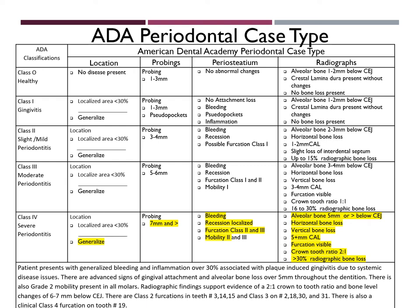My ADA periodontal case type statement reads as follows: Patient presents with generalized bleeding and inflammation over 30% associated with plaque-induced gingivitis due to systemic disease issues. There are advanced signs of gingival attachment and alveolar bone loss over 5 mm throughout the dentition, with grade 2 mobility present in all molars. Radiographic findings support a 2-to-1 crown-to-tooth ratio and bone level changes of 6 to 7 mm below CEJ. There are class 2 furcations on teeth 3, 14, 15, class 3 on teeth 2, 18, 30, and 31, and a clinical class 4 furcation on tooth number 19.